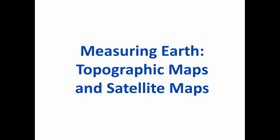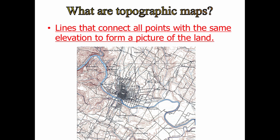We are going to be taking some flip video notes on topographic maps and satellite maps. So what is a topographic map? A topographic map is a map that shows and connects all points of the same elevation to form a picture of land. Below is a picture of a topographic map of Austin, Texas, our capital.